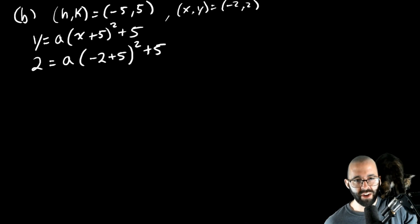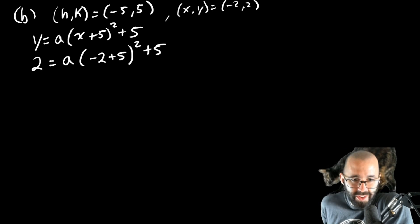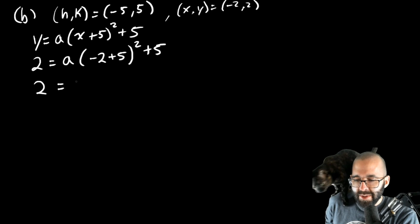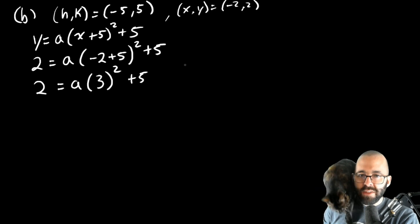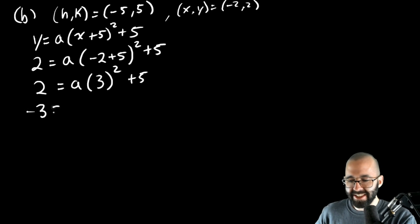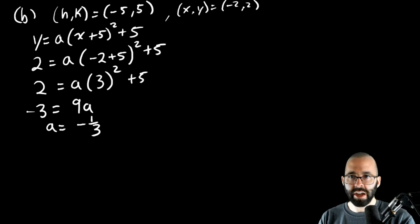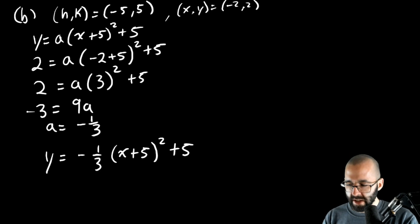We're going to solve for a carefully. Simplifying: two equals a times three squared plus five. Subtract five from both sides: negative three equals nine a. Divide both sides by nine: a equals negative one-third. So y equals negative one-third times (x plus 5) squared plus five.